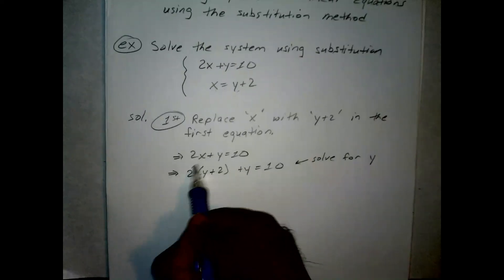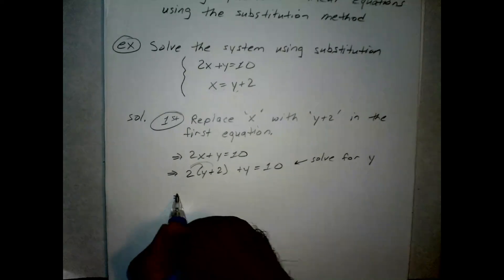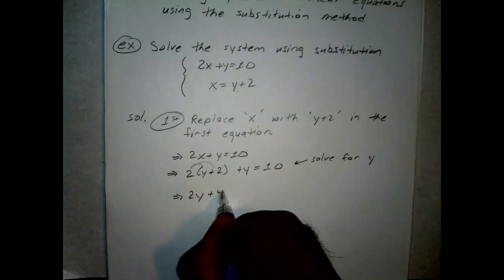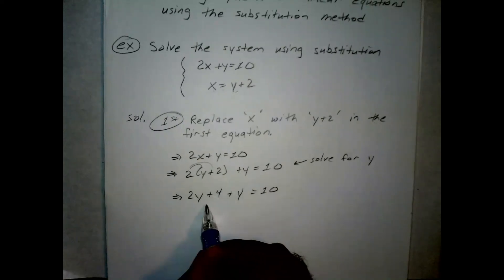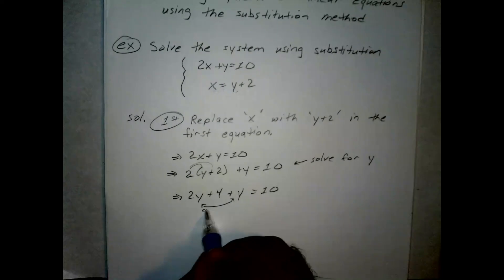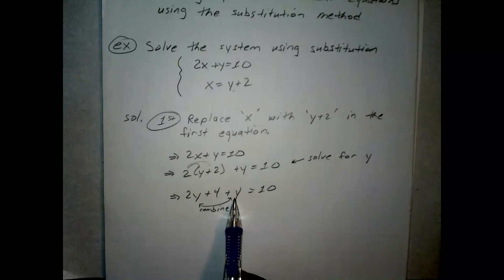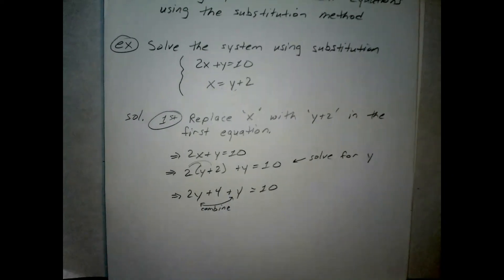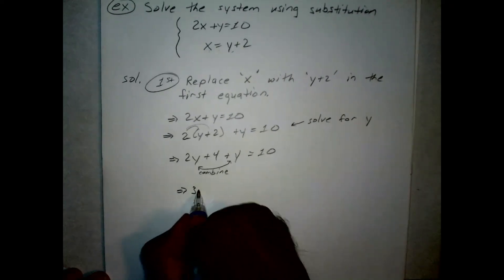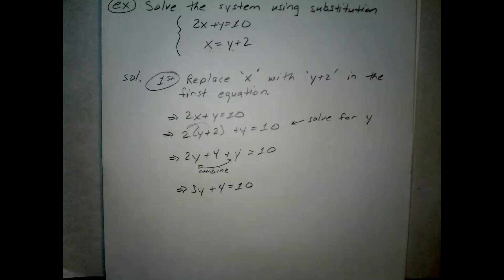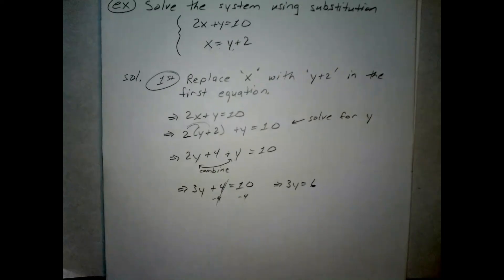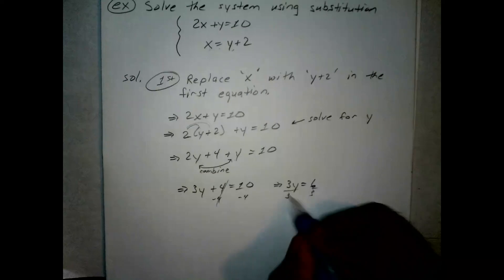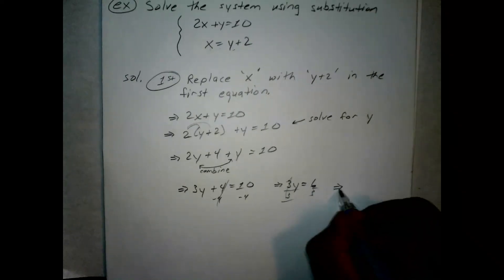Distributing the 2: 2 times y plus 2 gives 2y plus 4 plus y equals 10. Combining like terms, 2y plus 1y equals 3y, so we have 3y plus 4 equals 10. Subtract 4 from both sides: 3y equals 6. Dividing both sides by 3 gives y equals 2.